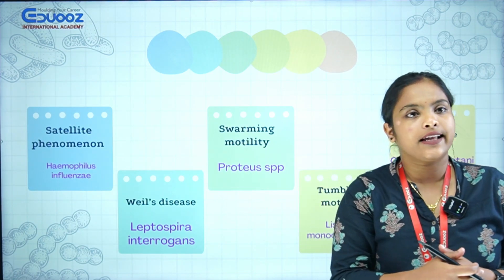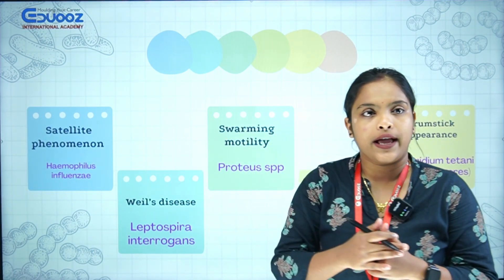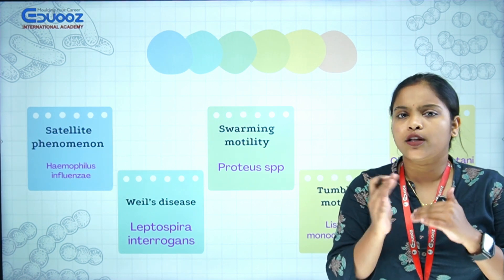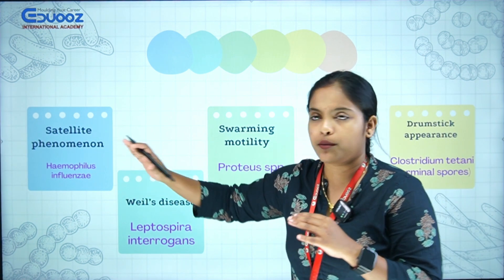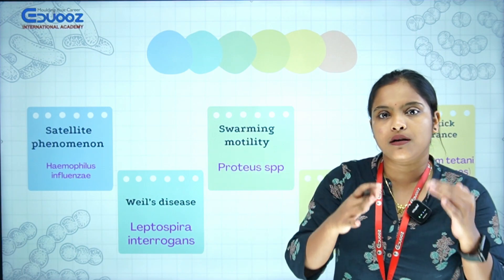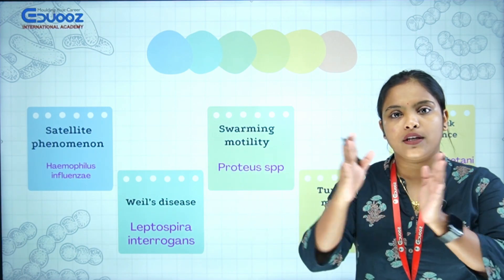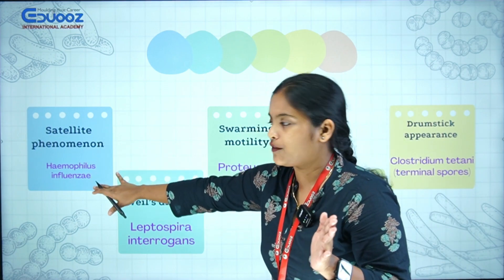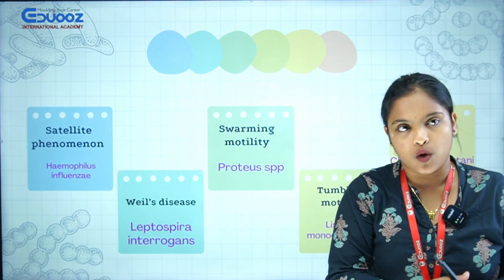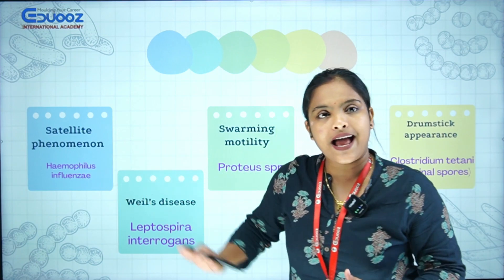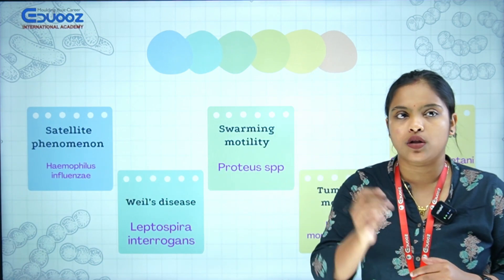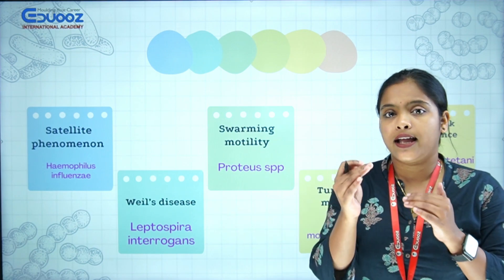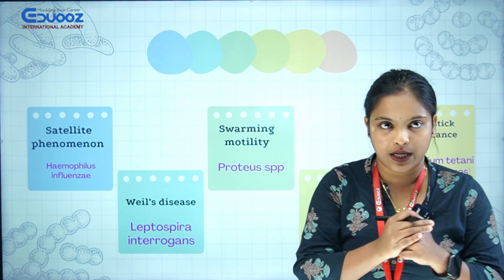Satellite Phenomenon — Satellite Phenomenon is associated with Haemophilus influenzae with Staphylococcus aureus. Satellite phenomenon: Haemophilus influenzae grows around Staphylococcus aureus colonies.